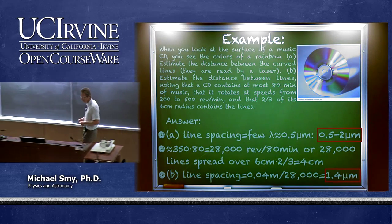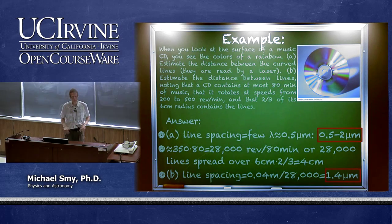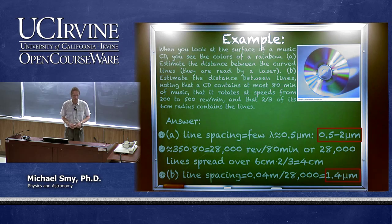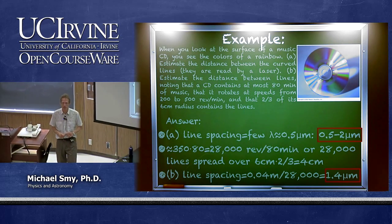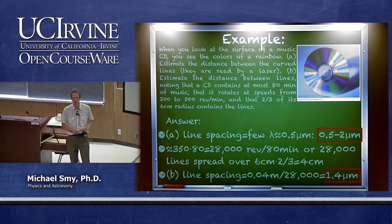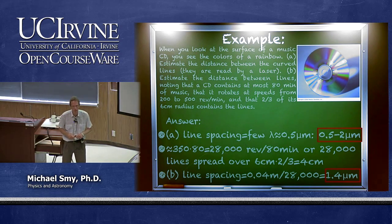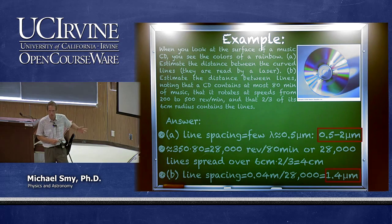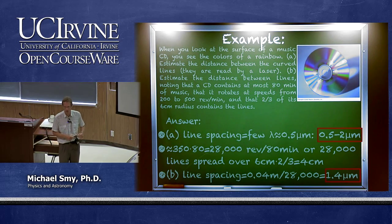The CD operates close to the diffraction limit when using a 650 nanometer laser. The development of 400 nanometer laser diodes in Japan led to the Blu-ray device, which achieves higher information density because the shorter wavelength allows finer line spacing.